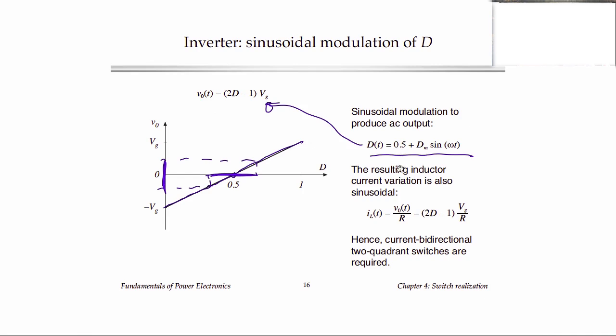If we wanted to make, say, a 60 Hz output, we could make this modulation frequency of the duty cycle be 60 Hz, and we would get a 60 Hz AC output.